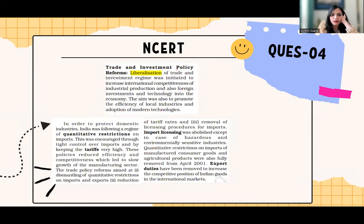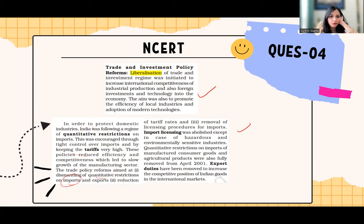You can pause and read the NCERT for reference. The key point here is that trade reforms were undertaken to remove quantitative restrictions on imports and achieve a reduction in tariff rates. These two were the main aims of trade reform — that is why the incorrect options are eliminated.